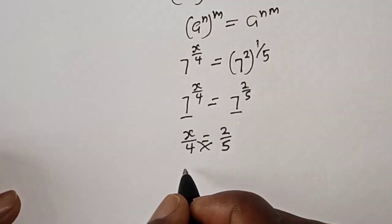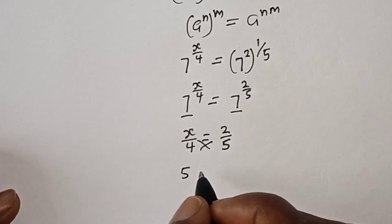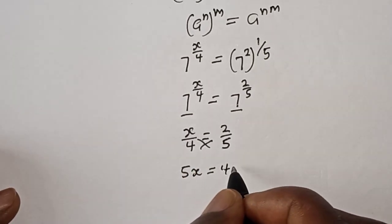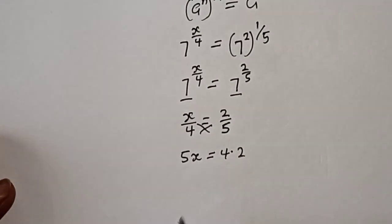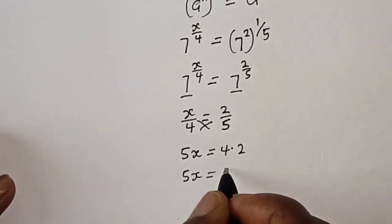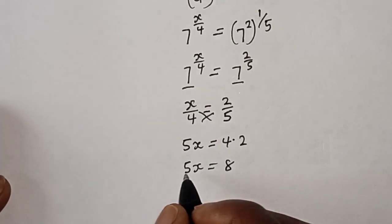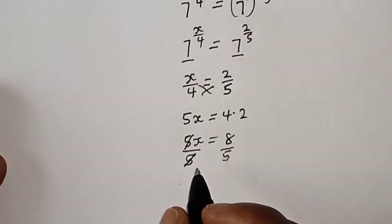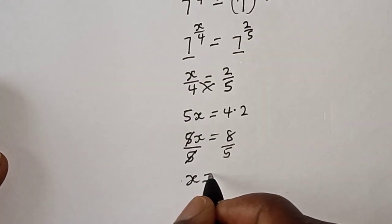Then let's cross multiply. This is 5x is equal to 4 times 2, which is 8. Then 5x is equal to 8.